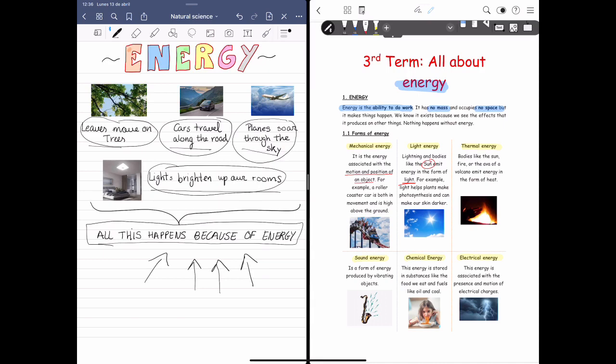Thermal energy. Fire or lava of a volcano also emit energy, but this energy is in the form of heat. So the sun, fire, or lava produce energy, but in the form of heat.